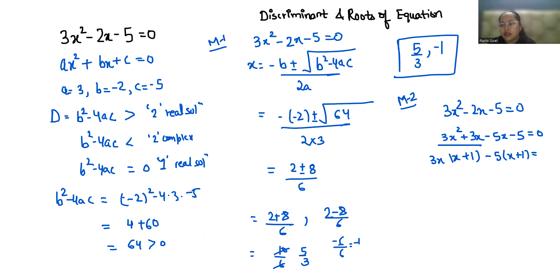If x plus 1 is common, we get 3x minus 5 equals 0. So from x plus 1 equals 0, we get x equals minus 1. From 3x minus 5 equals 0, we get 3x equals 5, so x equals 5 by 3.